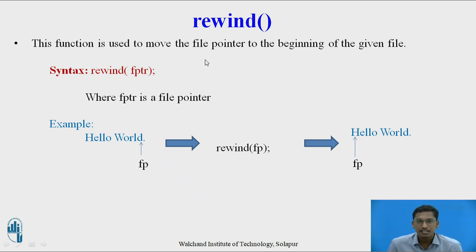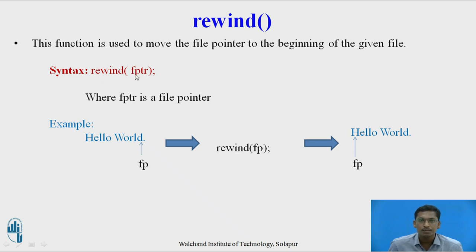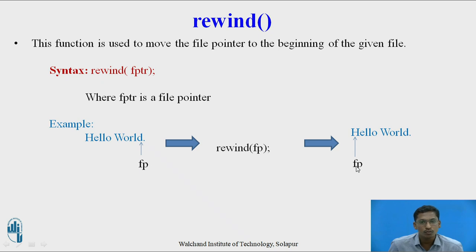The last function is rewind. rewind(fp) is used to move the file pointer to the beginning of the file. The syntax is rewind(file pointer). For example, if 'hello world' is a string and the file pointer is currently pointing to 'd', after executing rewind(fp), the file pointer will move to the beginning of the file and point to 'h'.